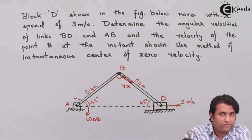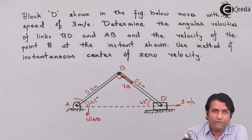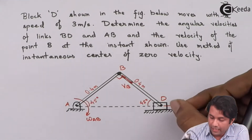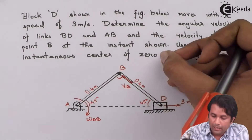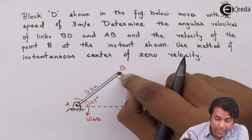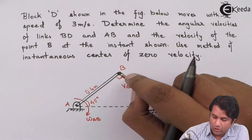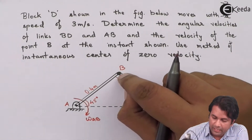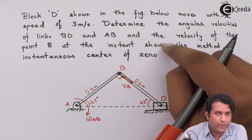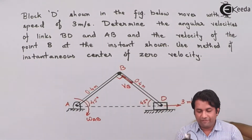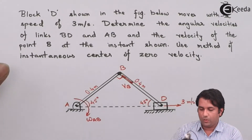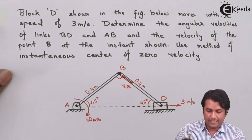To find the ICR, I need to draw perpendiculars from these two velocity points. If I take a perpendicular from D and project it vertically up, and take point B and project a perpendicular to its velocity direction, I'll get the ICR somewhere at their intersection. I'll draw the FBD for that and explain how to find the ICR.